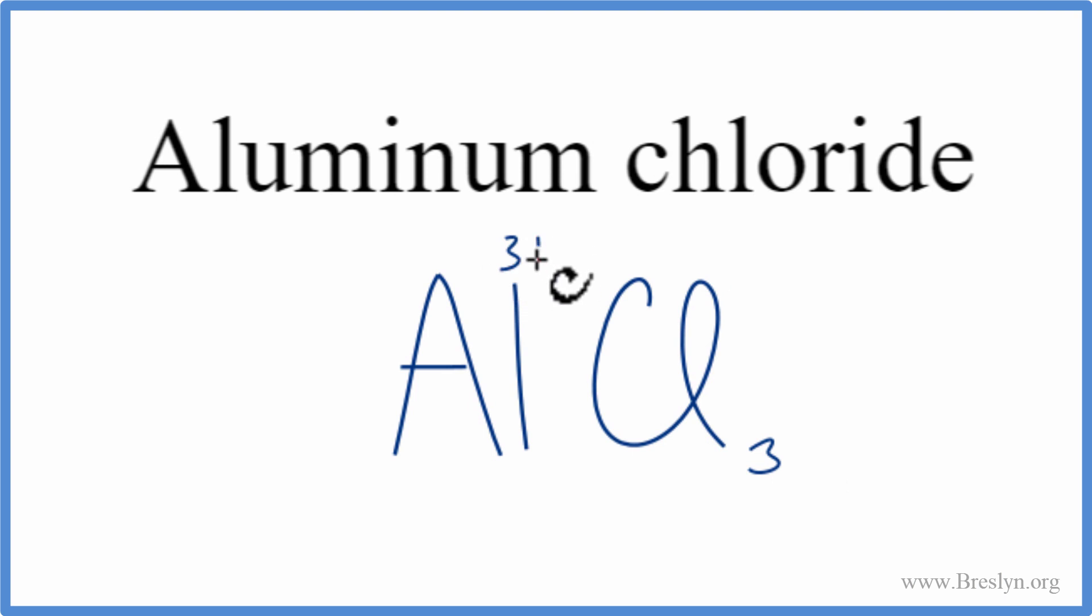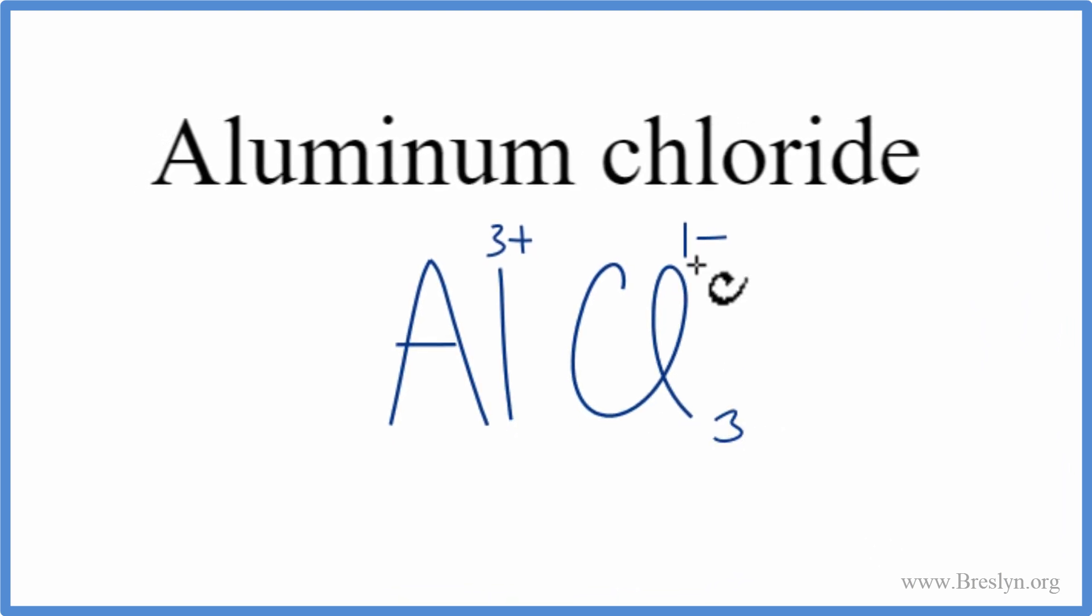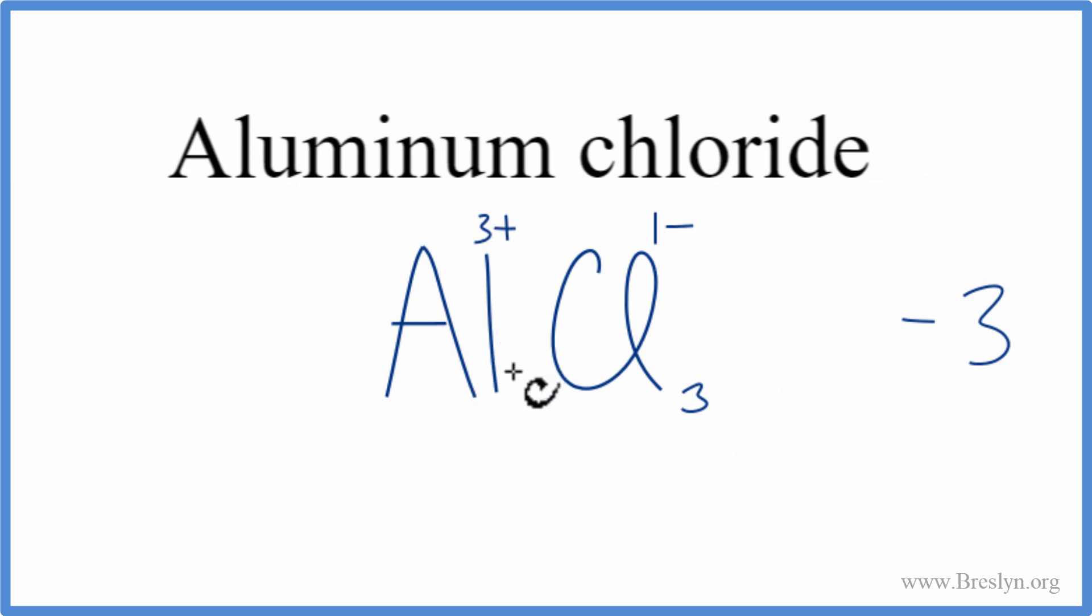We said aluminum was three plus, chlorine had a one minus charge. We have three of these chlorines, each one has a one minus charge. Three times one minus, so we get a minus three here. Aluminum one times a three plus, we get a plus three. So plus three minus three, that would cancel out, give us a net charge of zero. So this is the correct formula for AlCl₃, aluminum chloride.